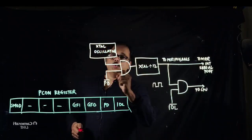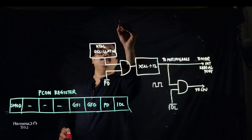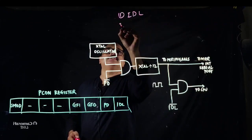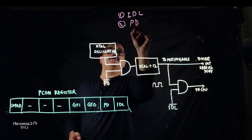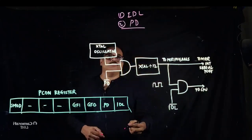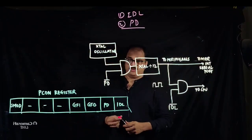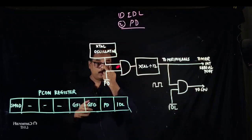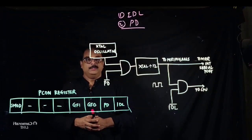In the case of the 8051, there are two power saving modes. The first one is idle mode and the second is power down mode. Today we are going to see what exactly is idle mode and what exactly is power down mode, and what is the difference between the two.